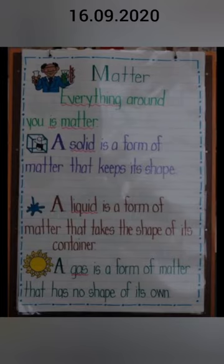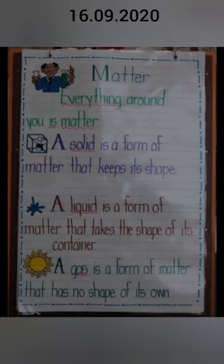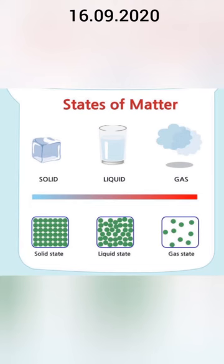Everything around you is matter and these three terms should be clear. A solid is a form of matter that keeps its shape — that means solids are hard in nature. A liquid is a form of matter that takes the shape of its container — anything which is liquid is watery in form and can take up any shape. A gas is a form of matter that has no shape of its own; gas is totally invisible. All three things are totally different from each other. As you can see in the states of matter diagram, it comprises solid, liquid and gas.